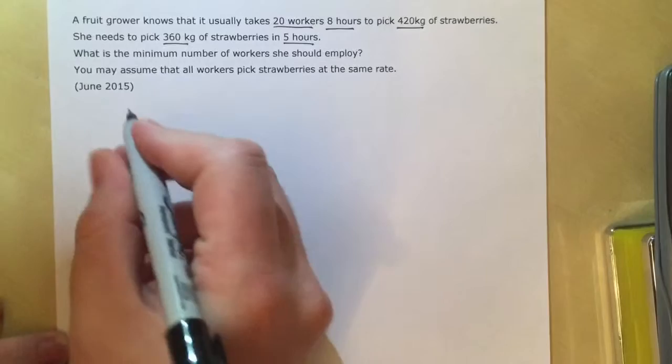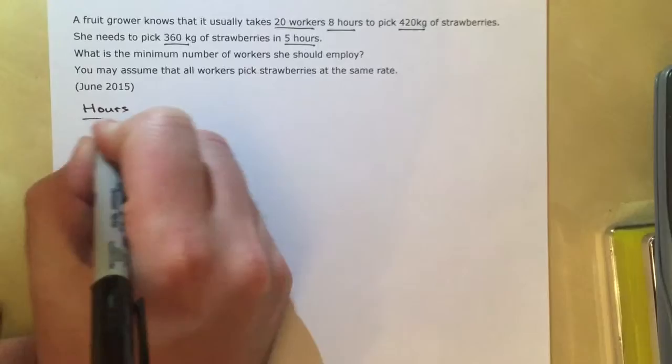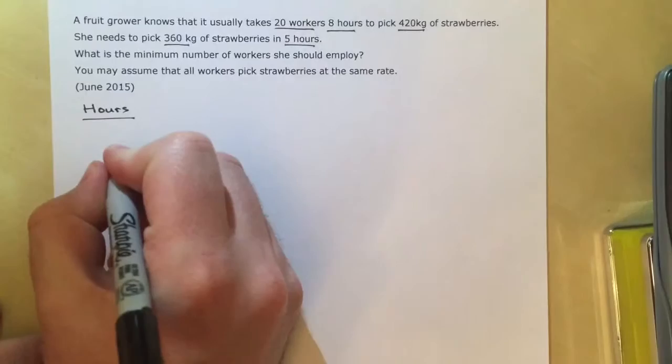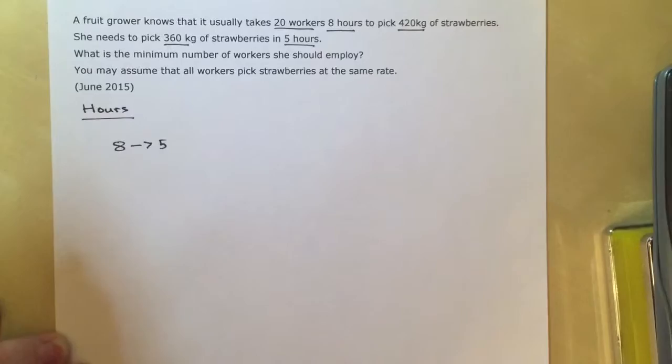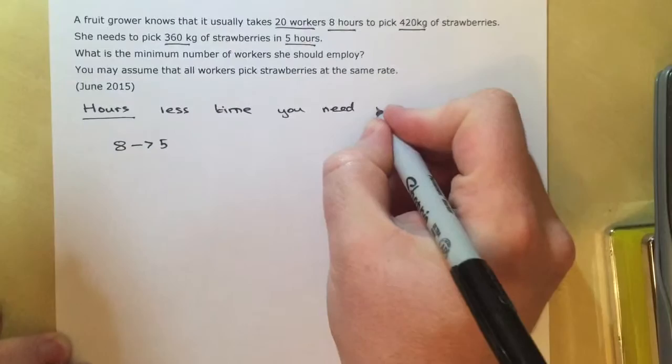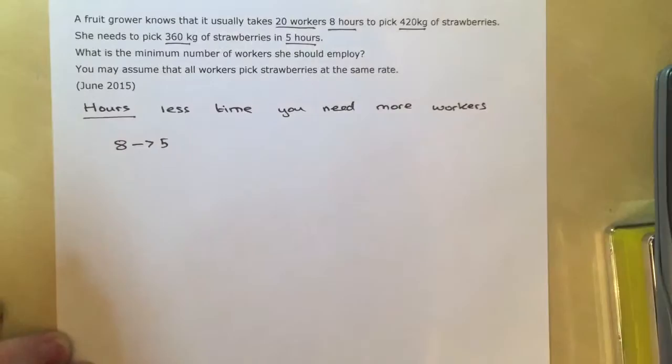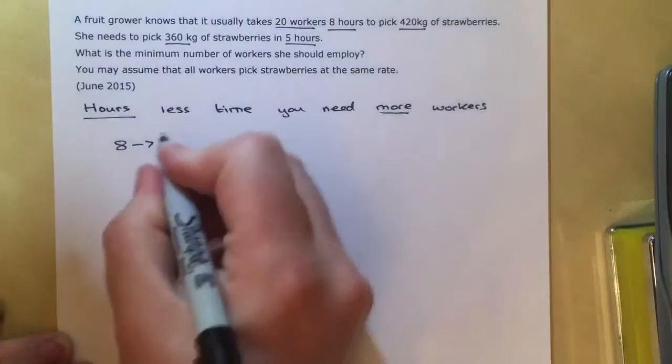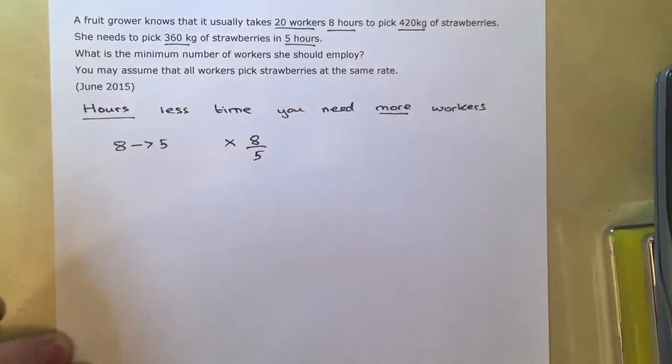First of all, we'll look at the time or the number of hours. In this question we're going from 8 hours to 5 hours. So when you're picking strawberries, if you need to do it in less time, you'll need more workers. So if we need more workers, we want our multiplier to be a bigger number, so we make the fraction with a bigger number on top.